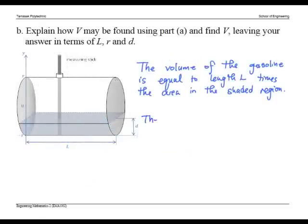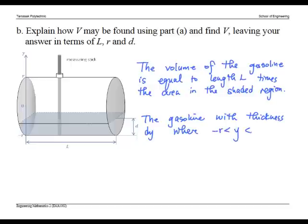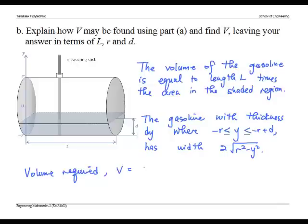So the gasoline with thickness dy, where y is between negative r and negative r plus d, has width 2 square root of r squared minus y squared. The volume required is L times the shaded area, or L times the integral from negative r to negative r plus d of 2 square root of r squared minus y squared dy.